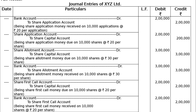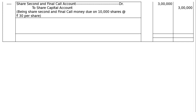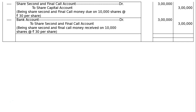When the money is 100% of share value, we call it the Second and Final Call. Share Second and Final Call Account debited to Share Capital Account — Rs.3,00,000. Narration: being share second and final call money due on 10,000 shares at the rate of Rs.30 per share. Then Final Call received: Bank Account debited to Share Second and Final Call Account — Rs.3,00,000. Narration: being share second and final call money received on 10,000 shares at the rate of Rs.30 per share.